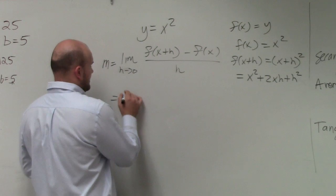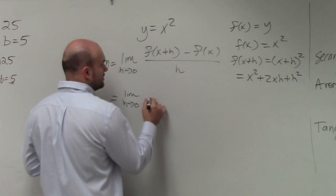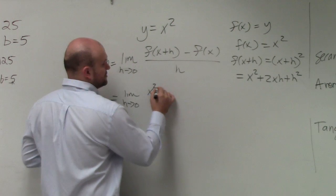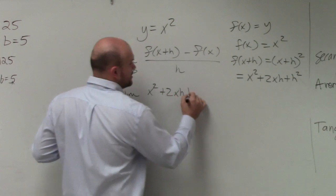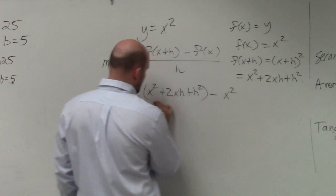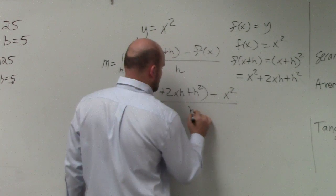Therefore, I have limit as h approaches 0. Now we have x squared plus 2xh plus h squared minus x squared all over h.